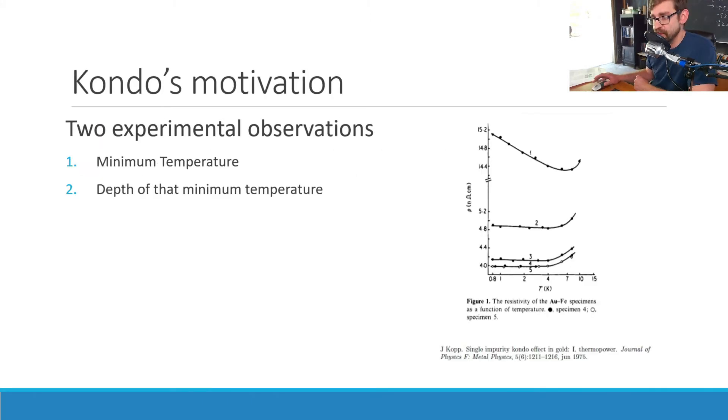So Kondo had some motivations for wanting to do this work. The two experimental observations he had were that, firstly, there was a minimum temperature before it would begin to rise. And secondly, the minimum depth of the temperature seemed to have a very specific relationship. It was related to the minimum resistivity and what the resistivity should be at T equals zero or absolute zero. And these two observations led Kondo to believe that the problem had to do with adding spins perturbatively as opposed to deriving correlations between localized spin conditions.